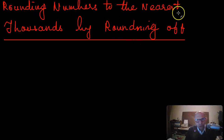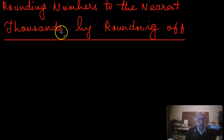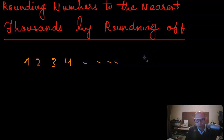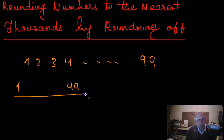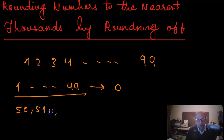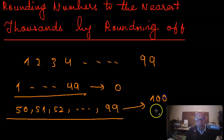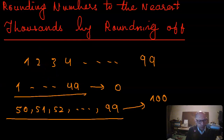In this video we will round numbers to the nearest thousands by rounding off. In the previous video when we were rounding numbers to the nearest hundreds, we talked about numbers from 1 all the way up to 99. Numbers 1 to 49 are rounded to zero, and all the numbers from 50 to 99 are rounded to 100 when rounding to the nearest hundreds.